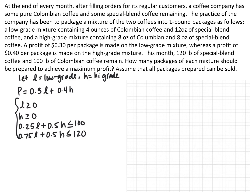Define variables: let L be the number of low-grade packages and H be the number of high-grade packages. The objective function for profit is P = 0.3L + 0.4H. Constraints: L ≥ 0 and H ≥ 0. For Colombian coffee — 100 pounds total, with 0.25 pounds per low-grade package and 0.5 pounds per high-grade — gives 0.25L + 0.5H ≤ 100. For the special blend — 120 pounds total, with 0.75 pounds per low-grade and 0.5 pounds per high-grade — gives 0.75L + 0.5H ≤ 120.